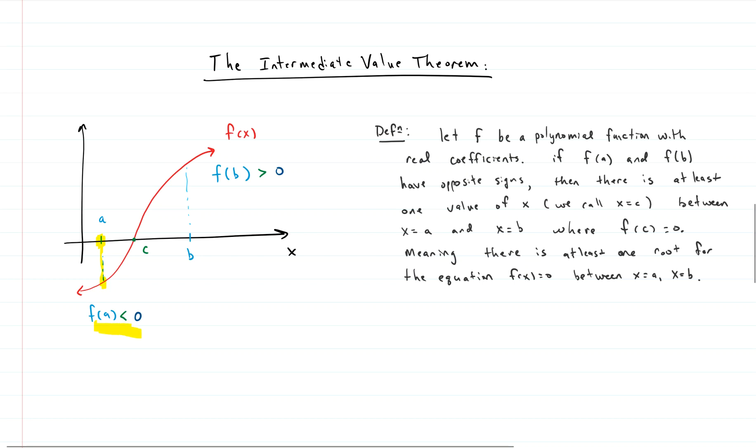You pick another number, x equals b, and you evaluate that. If that number is positive, all it says is that you can't change signs in the polynomial, meaning the y value of the polynomial is negative and it changes to positive or vice versa. You can't have that happening without the polynomial first going through zero or going through the x axis. That's all the intermediate value theorem says.